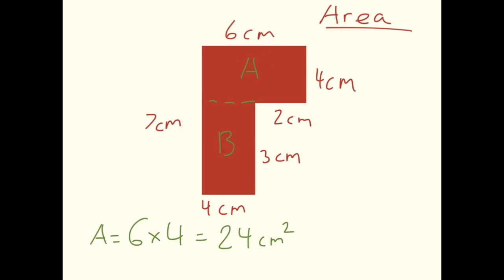Now shape B. To find the area of this shape, we multiply the length—here we have 4 centimeters—multiplied by the width, which is 3 centimeters.